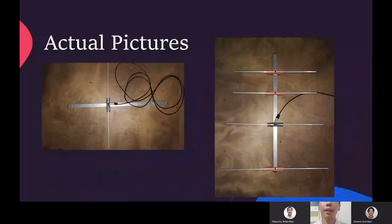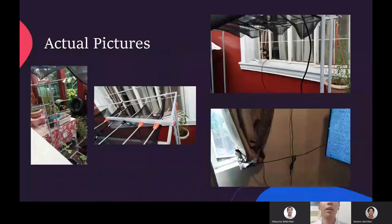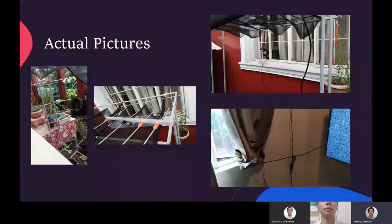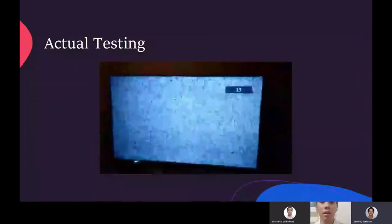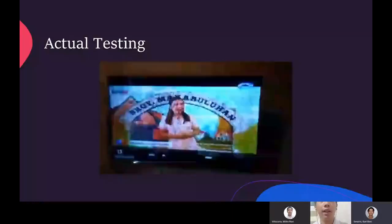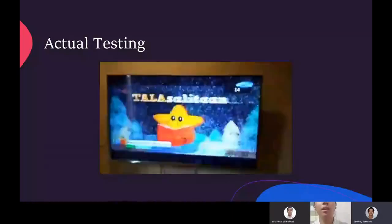This is where the antenna is placed to see its effectiveness and whether the antenna will be able to transmit different channels and videos. As we can see in the video. Although it has the discrepancy, the antenna is able to transmit different channels.